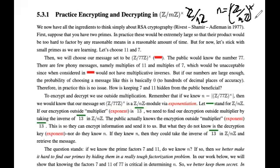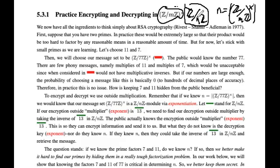Because if you raise any group element to the power N — which is how big this group is — we're always going to get the identity of this group. So it's going to behave like the zero exponent, and really the exponents live in Z mod NZ, where N is the size of that multiplicative group. That exponentiation lives in mod N arithmetic.